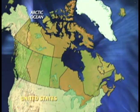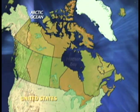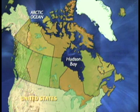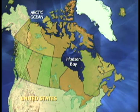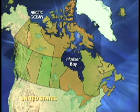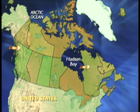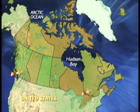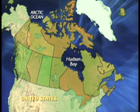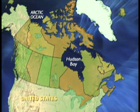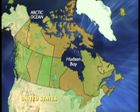Topographically, Canada is shaped like a giant basin with its lowest point around the Hudson Bay, a large inland sea in the center of the country, and mountains that run along the edges of its eastern and western sides. Canada is divided into ten provinces and three territories.